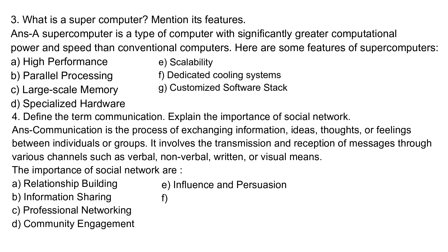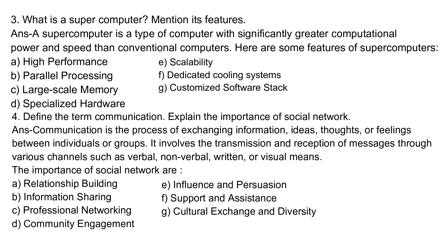Four: Define the term communication and explain the importance of social networks. Answer: Communication is the process of exchanging information, ideas, thoughts, or feelings between individuals or groups. It involves the transmission and reception of messages through various channels such as verbal, non-verbal, written, or visual means. The importance of social networks: A: Relationship building; B: Information sharing; C: Professional networking; D: Community engagement; E: Influence and persuasion; F: Support and assistance; G: Cultural exchange and diversity.